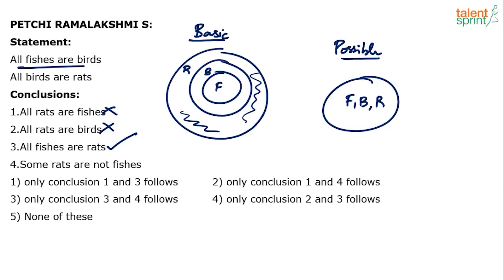All birds are rats — yes, all the birds are rats. If you take this as the possible diagram, conclusion 4 fails. Some rats are not fishes — which rats are not fishes? All the rats are fishes. If all the rats are fishes, can you say some rats are not fishes? No. Conclusion 4 fails. Conclusion 4 cleared the basic diagram but fails in the possible diagram. So only conclusion 3 definitely follows.